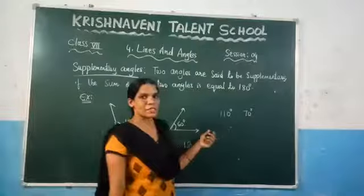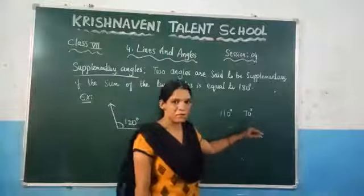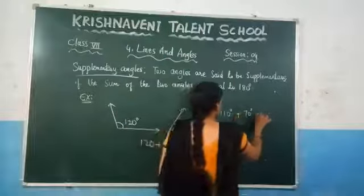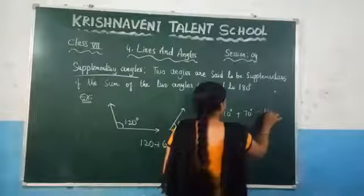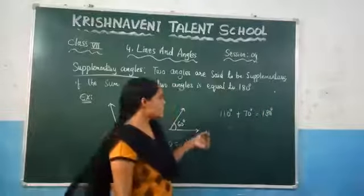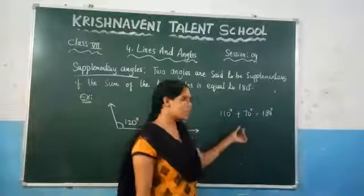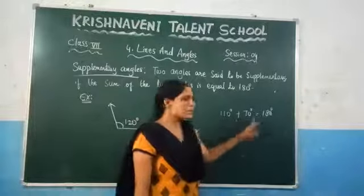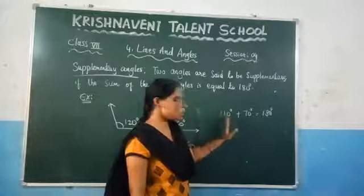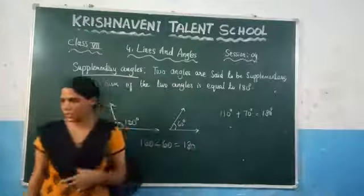What is the supplementary angle of 110 degrees? It is nothing but 70 degrees, because if you add 110 and 70 you will get 180 degrees. So we can say that the supplementary angle of 110 degrees is 70 degrees, or the supplementary angle of 70 degrees is 110 degrees.